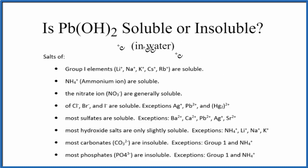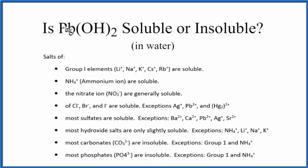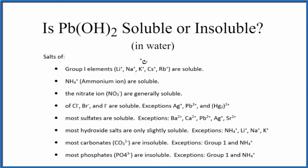We can use these solubility rules here to help figure that out. As we go down our rules, I can see most hydroxide salts are only slightly soluble, with a few exceptions — some group 1 elements and the ammonium ion. So as we look at this Pb(OH)₂, this is our hydroxide group, so this is a hydroxide salt. We would expect only a little bit would dissolve in water.